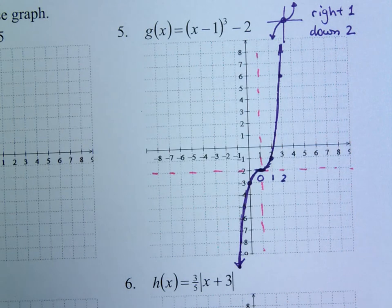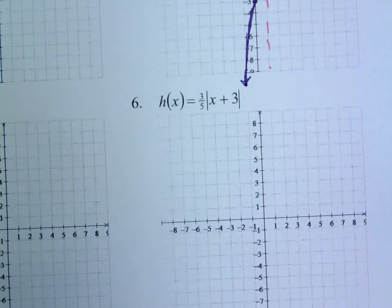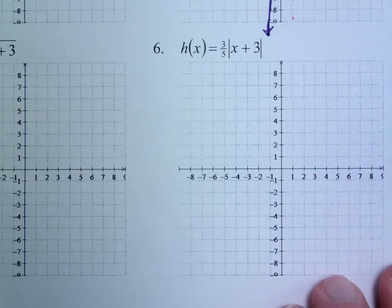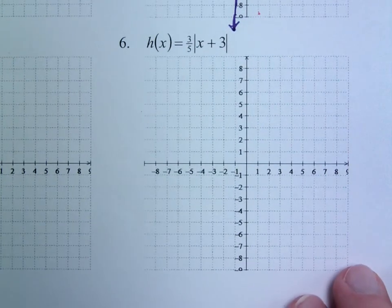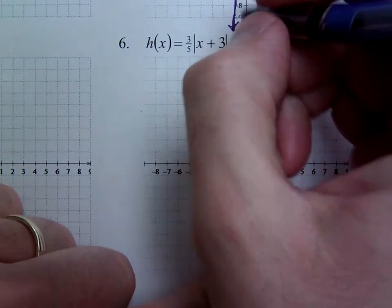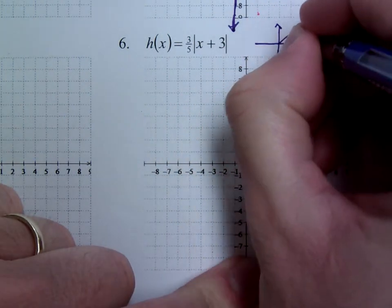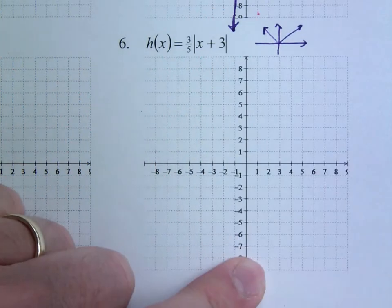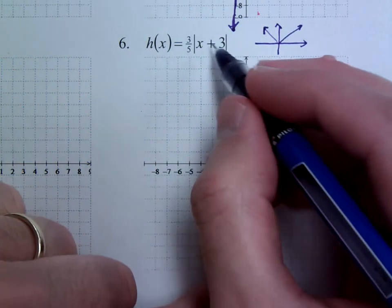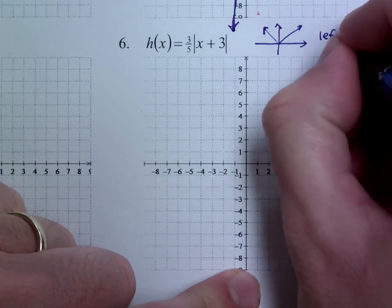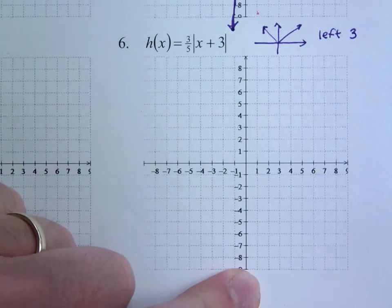Alright, let's look at number 6. Number 6 is an absolute value function. So we already know that its shape is a V shape like this. We can see that there's stuff going on on the inside here, so I'll do the opposite of that, which means I'll go to the left, 3 units.